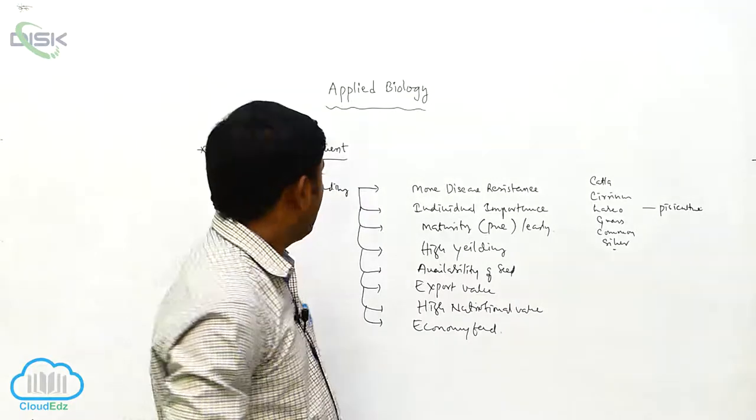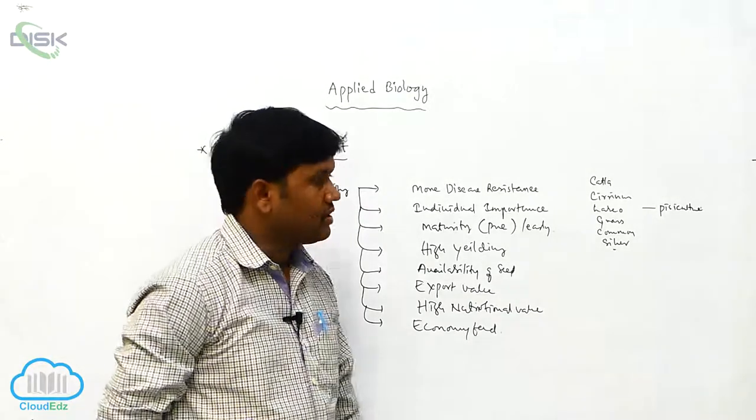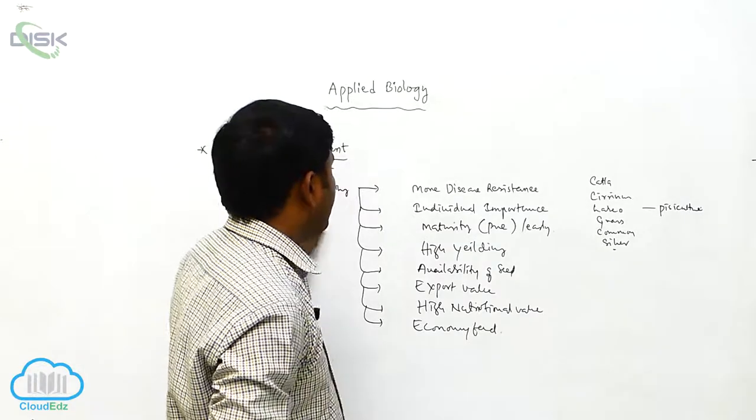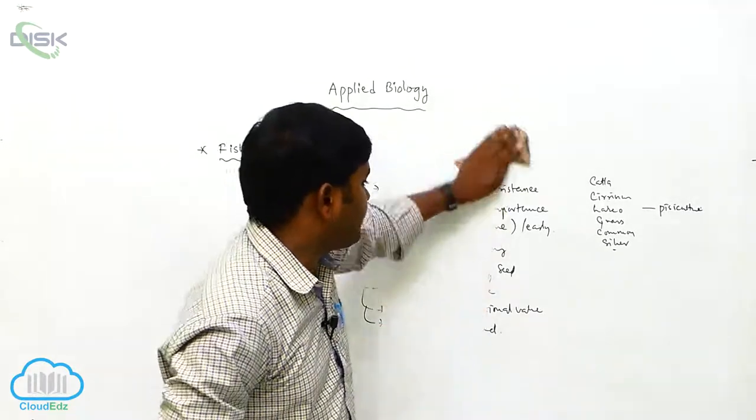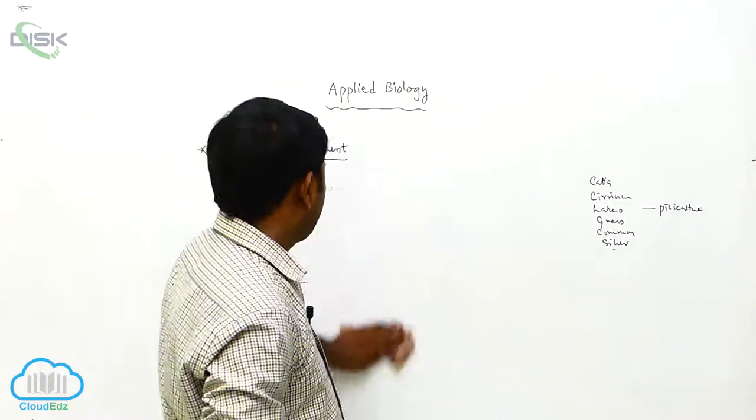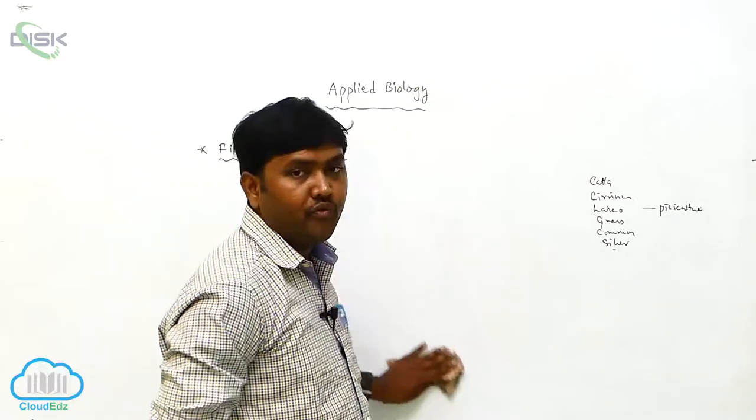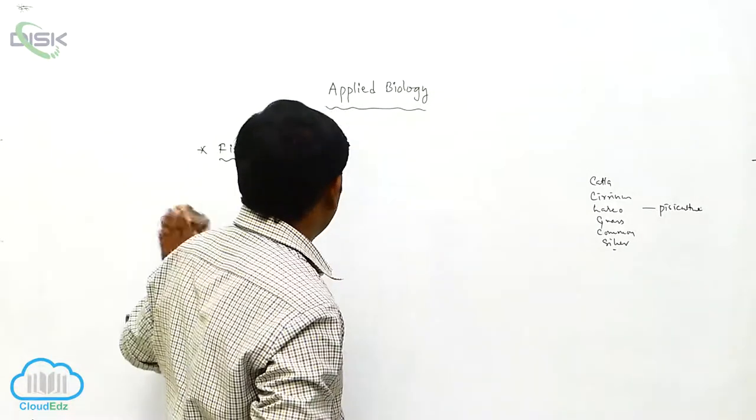Economy feed, so these are the characteristics which we have for breeding of the fishes. And as well as here, the Catla, Cirrhinus, Labeo Rohita, and Grass Carp and Common Carp or Silver Carp are used for the fish culture.